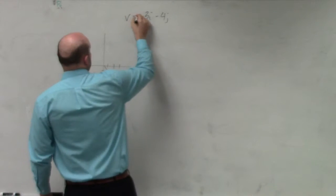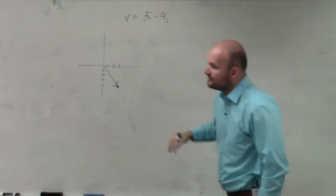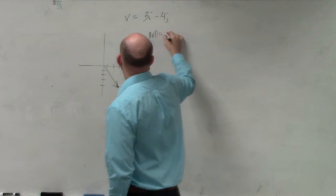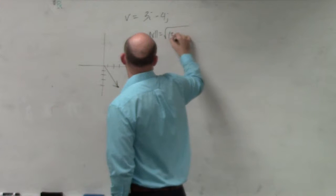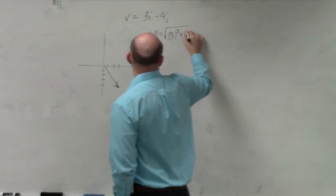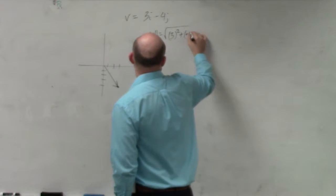Let's just call it V. So if I want to find the magnitude of my vector V, it's going to be the square root of three squared plus negative four squared.